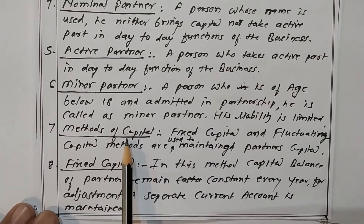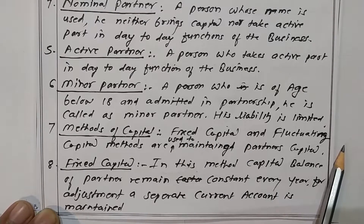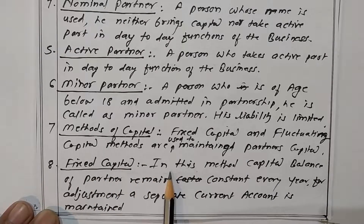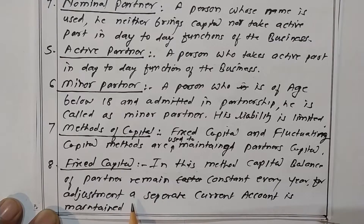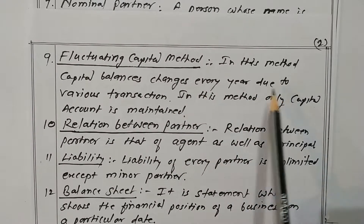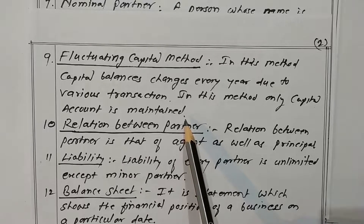What are the methods of capital? There are two methods: the fixed capital method and the fluctuating capital method. These are the only methods used to maintain a partner's capital account. In the fixed capital method, the capital balance of partners remains constant every year, and for adjustment purposes a separate account called a current account is opened. In the fluctuating capital method, capital balances change every year due to various transactions, and only a single capital account is maintained.